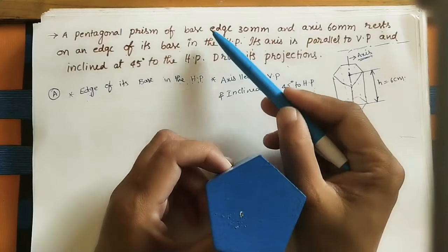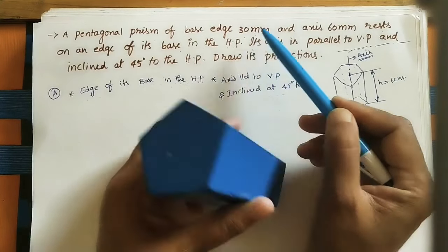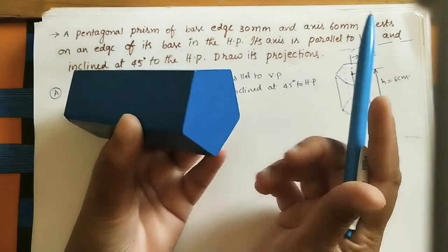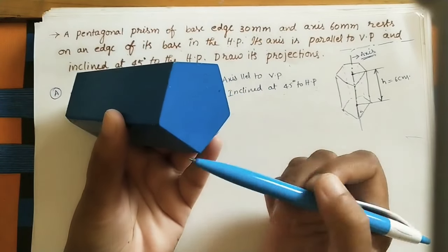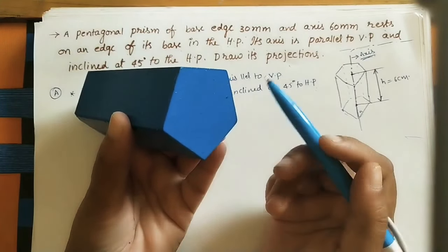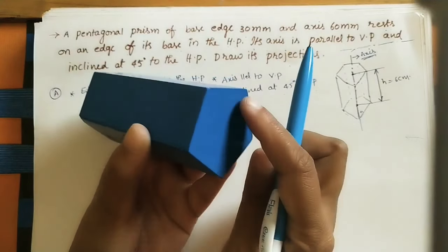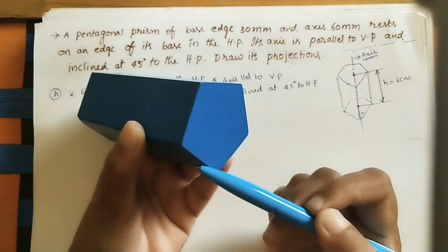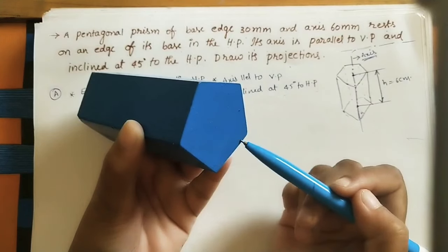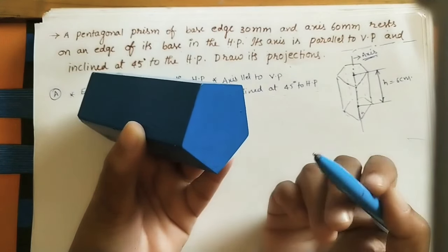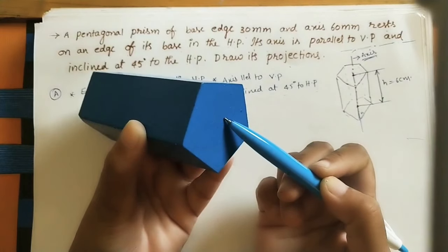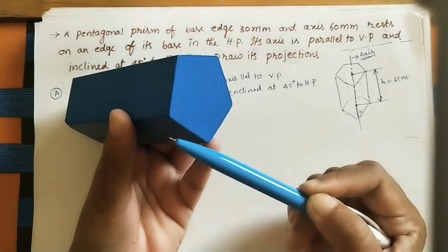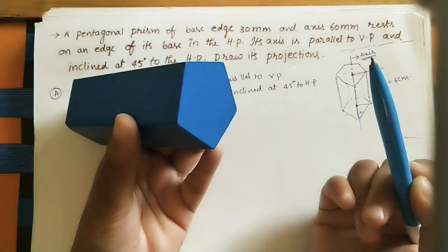The given data: base edge is 3 cm. In solids, we always consider regular polygons — all sides have equal length. So all five sides of the pentagon are 3 cm each, and all corner angles are equal. Base edge means one edge length is given as 3 cm, meaning all edges are 3 cm.